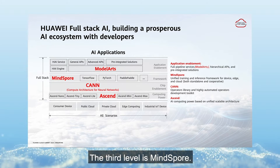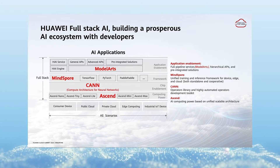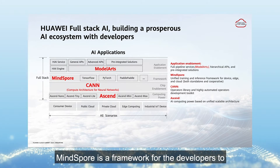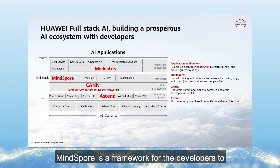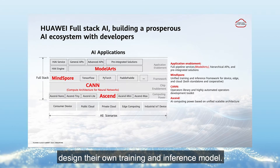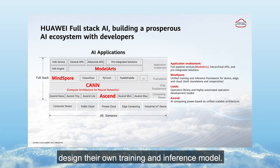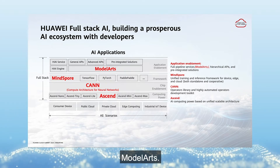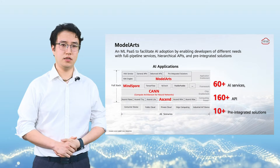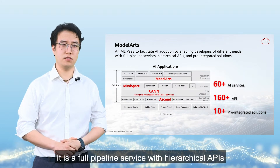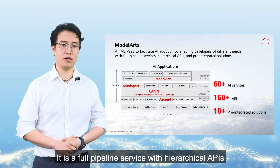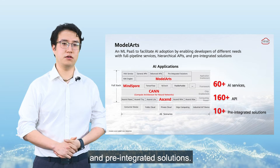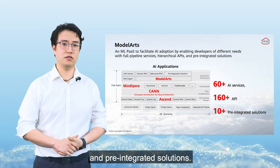The third level is MindSpore. MindSpore is a framework for developers to design their own training and inference models. The fourth level, which we introduce today, is Model Arts — a full pipeline service with hierarchical APIs and pre-integrated solutions.